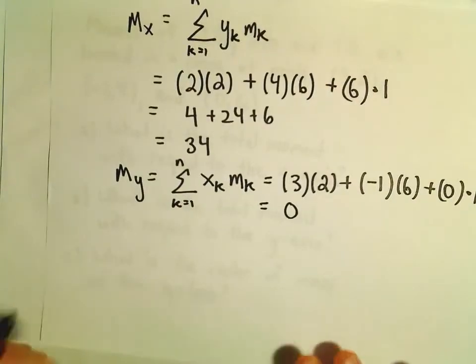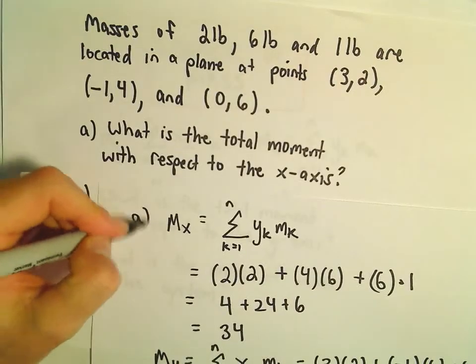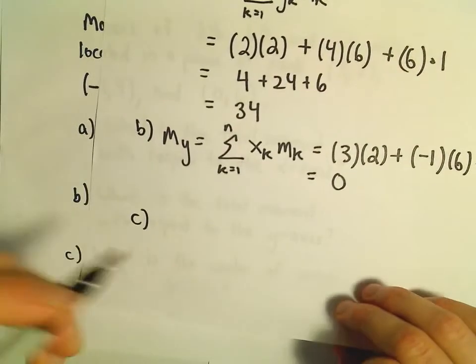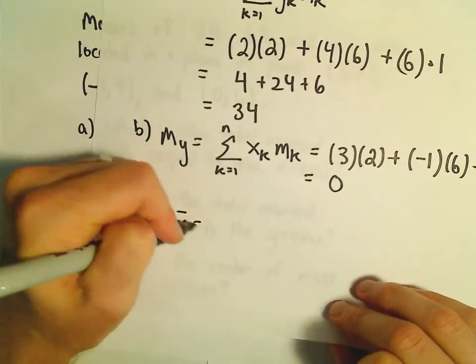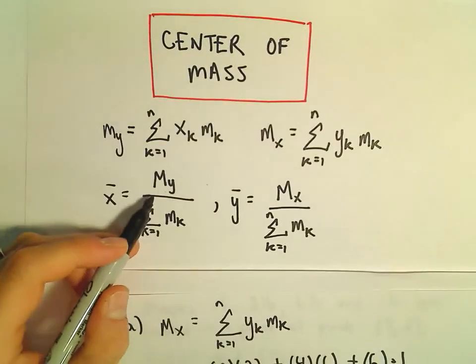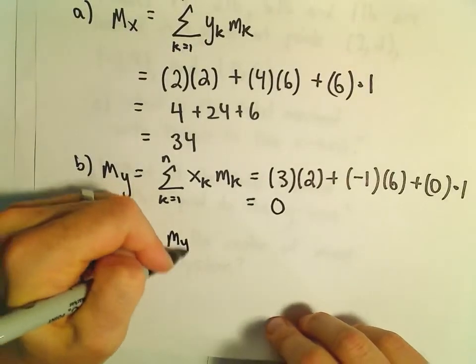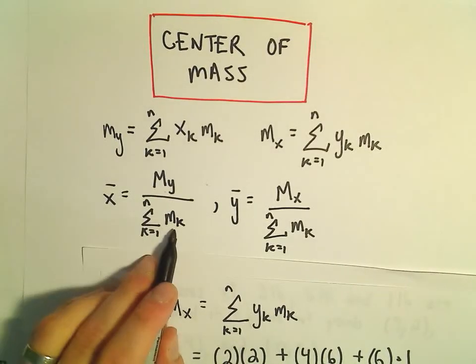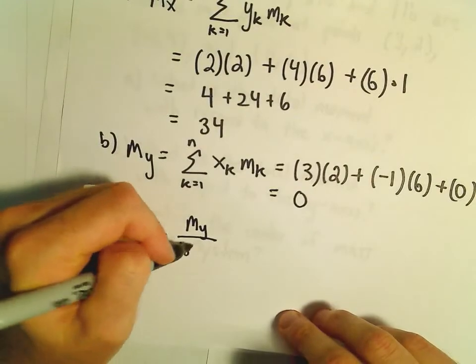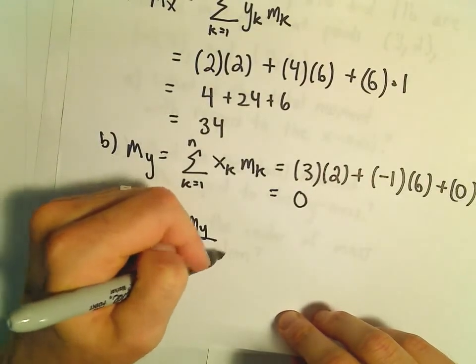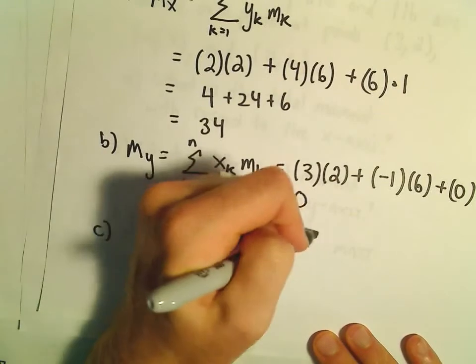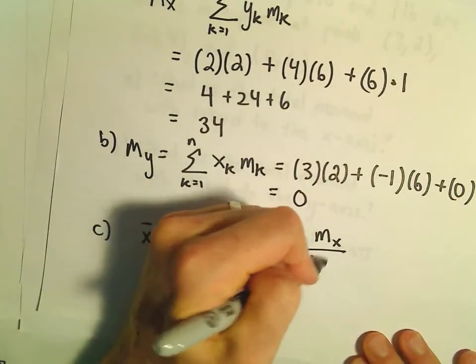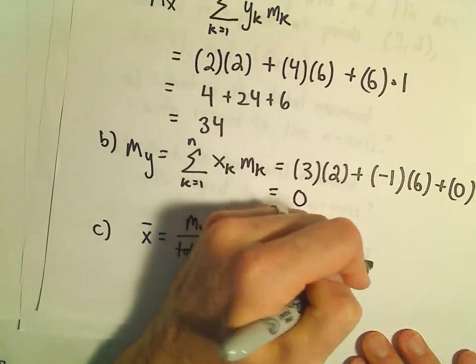That would be our part a and part b. Let's figure out what the center of mass is. To get x-bar, our formula is the moment about the y-axis divided by the sum from k equals 1 to n of m sub k, which represents the total mass. And y-bar will be m sub x, the moment about the x-axis, over the total mass.